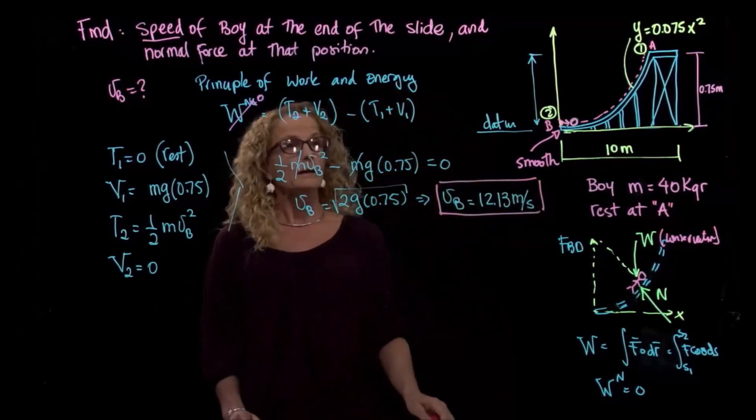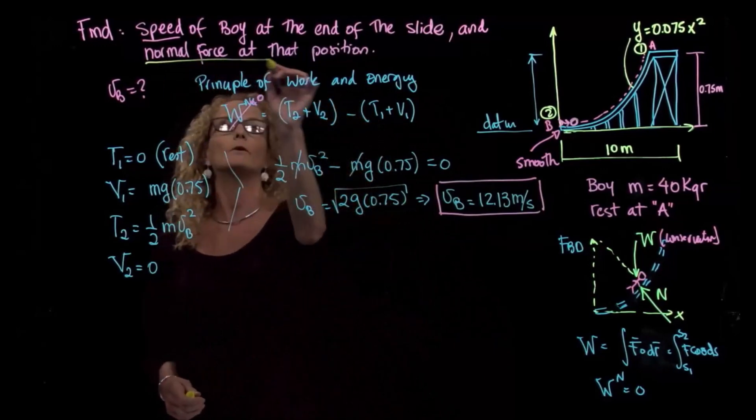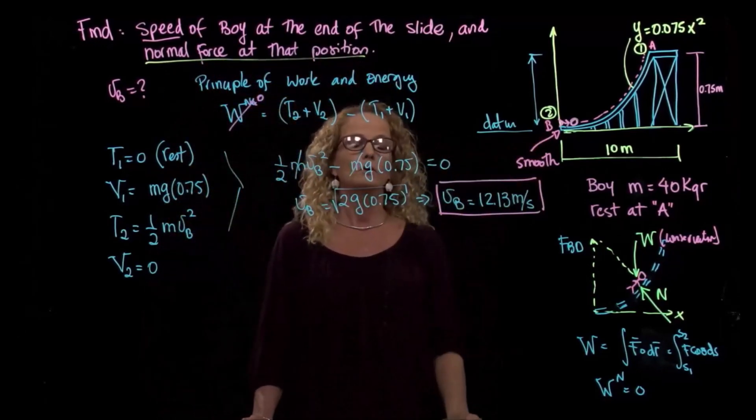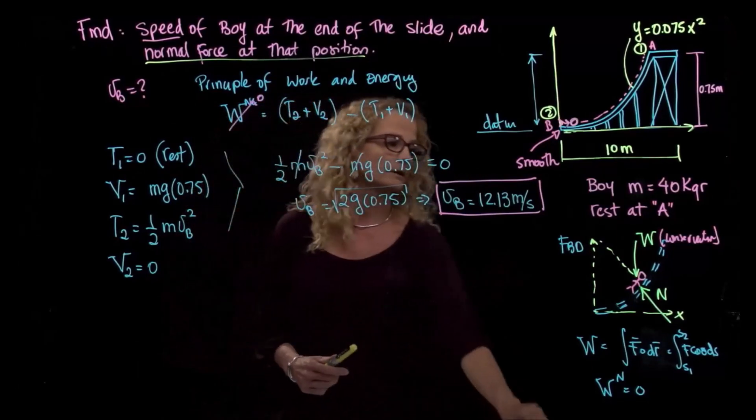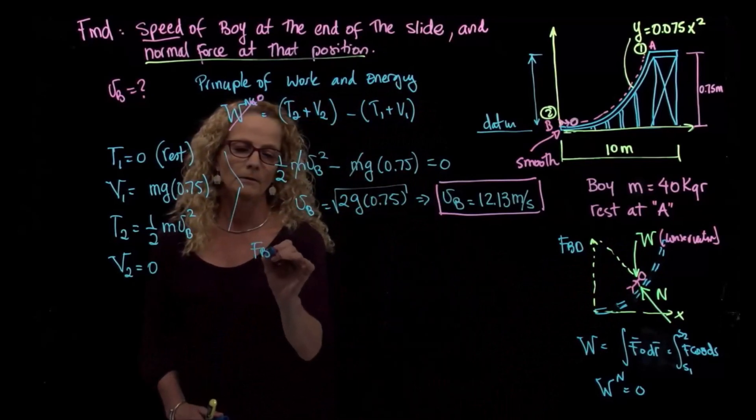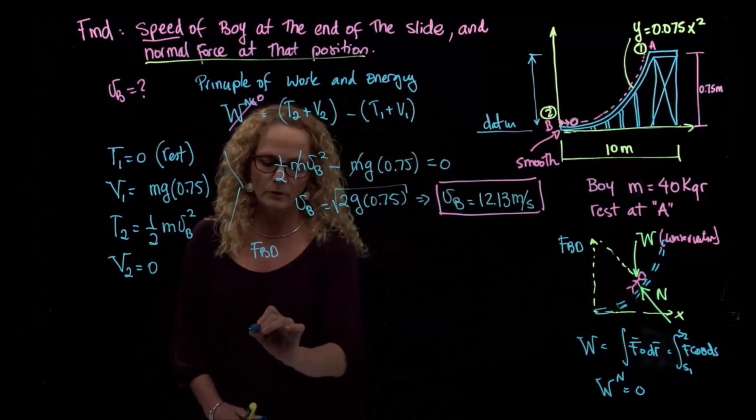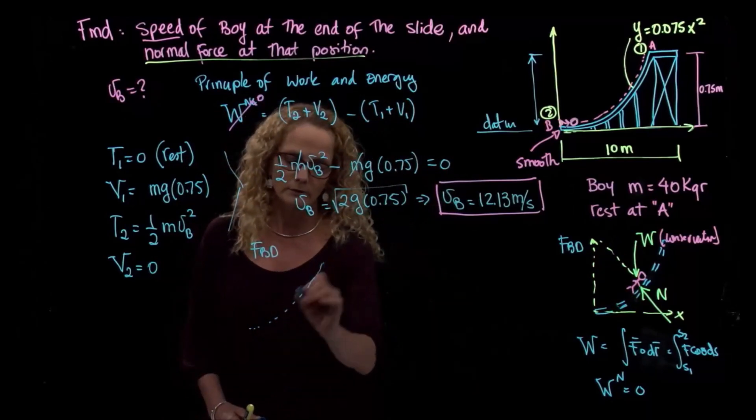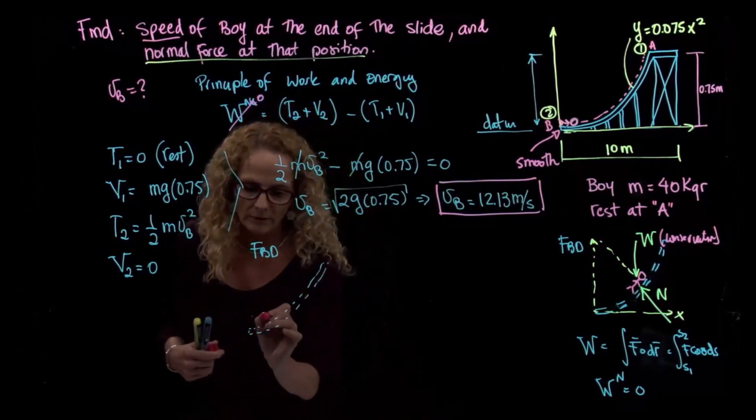Okay, and the second question we are asked to find is the normal force at that position. To find the normal force at that position, we have to do the free body diagram, which is very similar to this one, but not at a generic position, but at the end of my slope. So I have my slope over here, right? And I have my little boy over here.